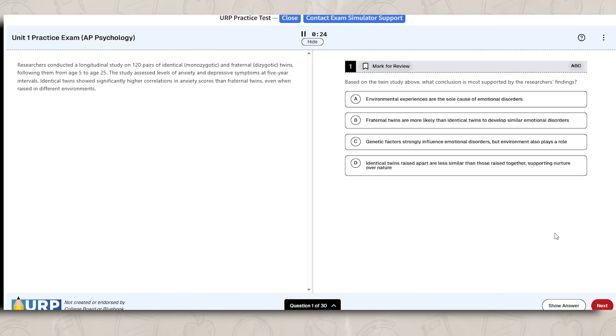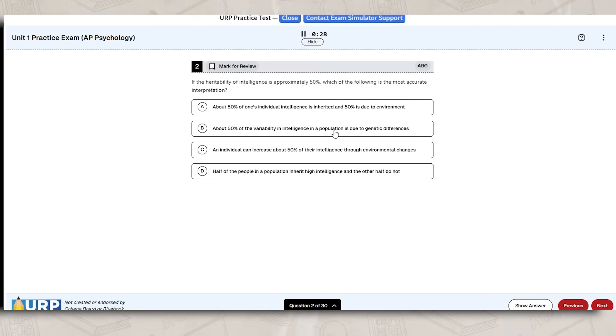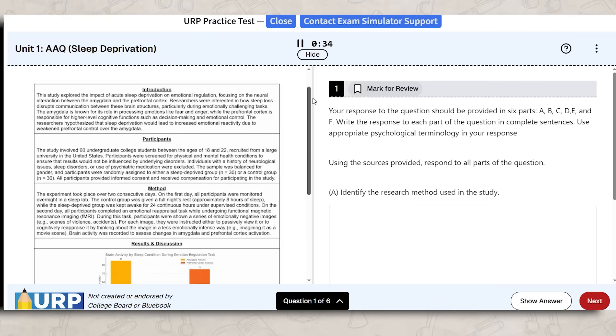All right, so there you have it, those are the different statistics that you may see on Part C of the AAQ. Now comes the time to practice. Don't forget to check out the different practice quizzes on all of these different concepts in my Ultimate Review Packet, and check out the Exam Slayer for unit exams and AAQs. As always, thank you all so much for watching. I'm Mr. Sin, and until next time, I'll see you online.